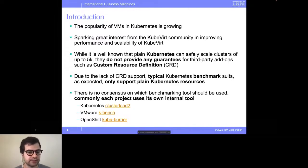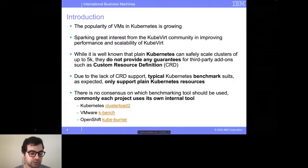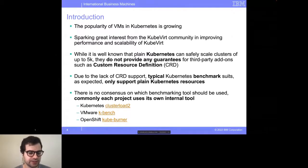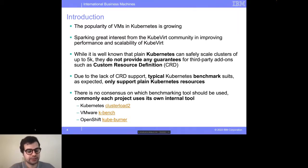The idea is to extend one of these benchmark tools to be able to test KubeVirt objects. The most famous projects for Kubernetes benchmark tools include the Kubernetes cluster loader tool, which is a big, complex tool that also creates the clusters and is specifically for Kubernetes, so we cannot easily submit PRs to extend it. There's also the VMware Keybench, which tests plain Kubernetes resources, and OpenShift also has KuBurn — and in this talk we are going to focus on KuBurn.